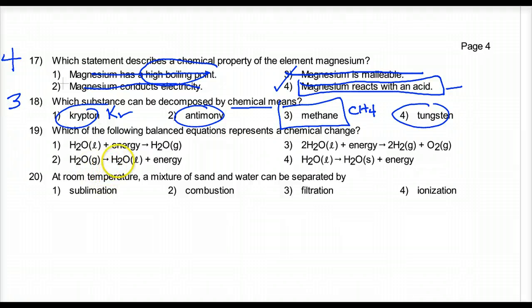Nineteen. Which of the following balanced equations is a chemical change? H2O stays as H2O. That's physical. H2O becomes H2O. Physical is a phase change. H2O becomes a new substance. That's your chemical change. An H2O liquid becoming H2O solid. Of course, freezing is a phase change.